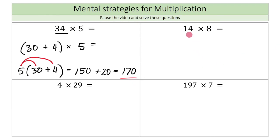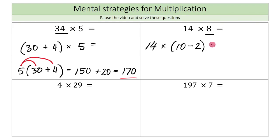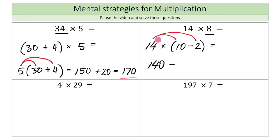Let's move on to 14 times 8. This time I'll break down 8 as 10 minus 2. So it's 14 times (10 minus 2). Distributing the 14: 14 times 10 is 140, minus 14 times 2 is 28. So 140 minus 28 equals 112.